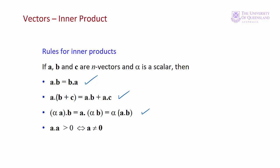If we have the dot product of a vector by itself and that's greater than zero, then the vector cannot be a null vector.